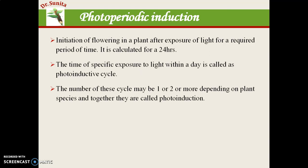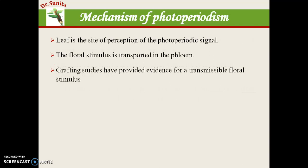The number of photo-inductive cycles may vary — one, two, or more — depending upon the plant species. Each inductive cycle is 24 hours, within which the plant receives a certain amount of light and a certain amount of dark. The site of perception for the photoperiodic signal is the leaf.